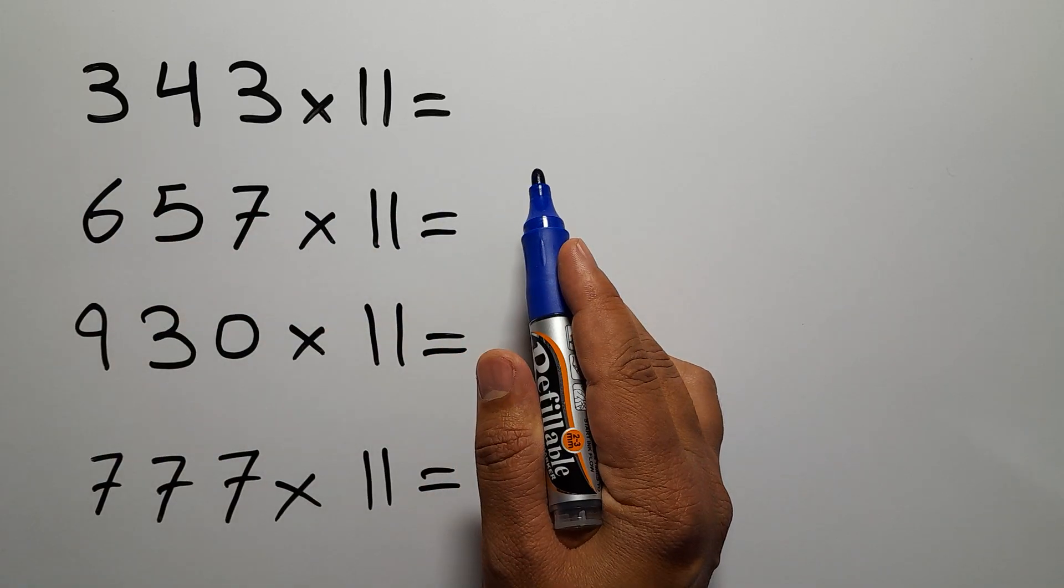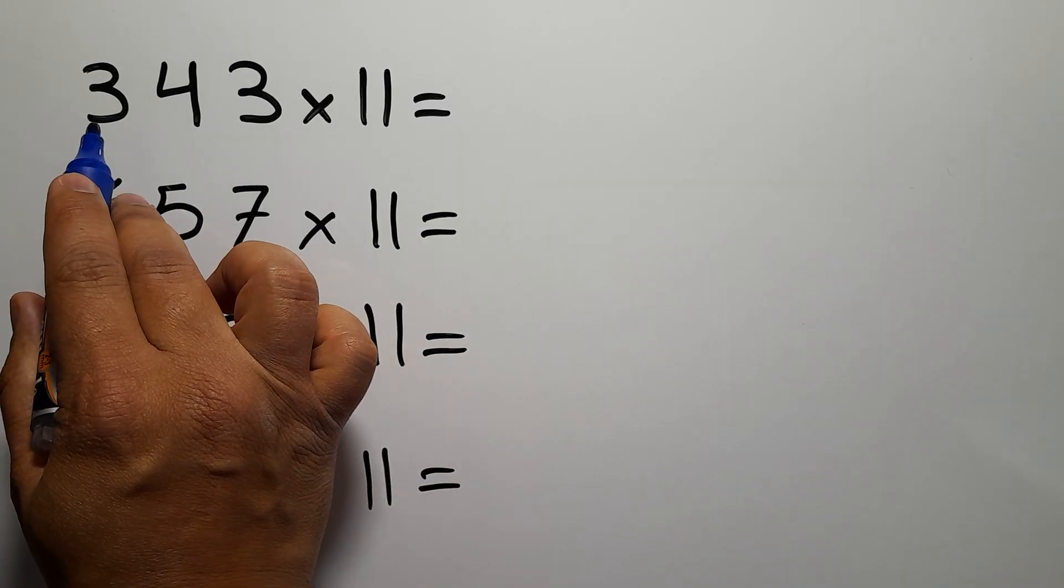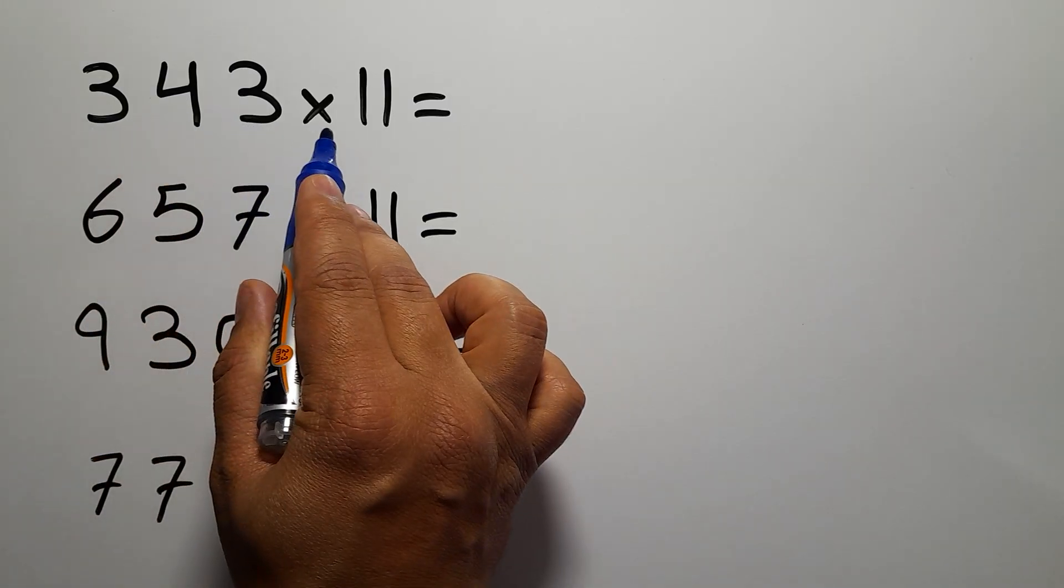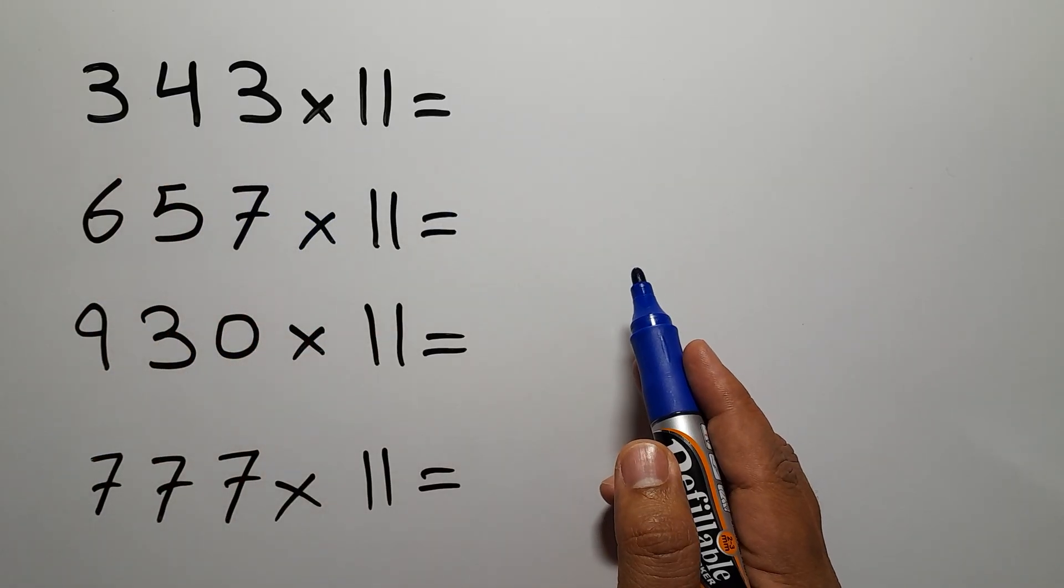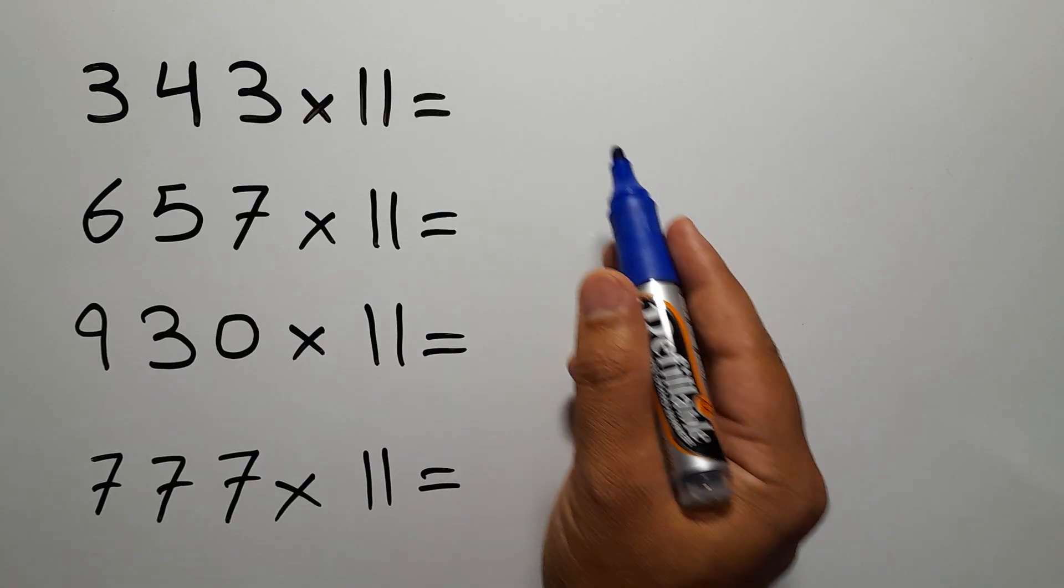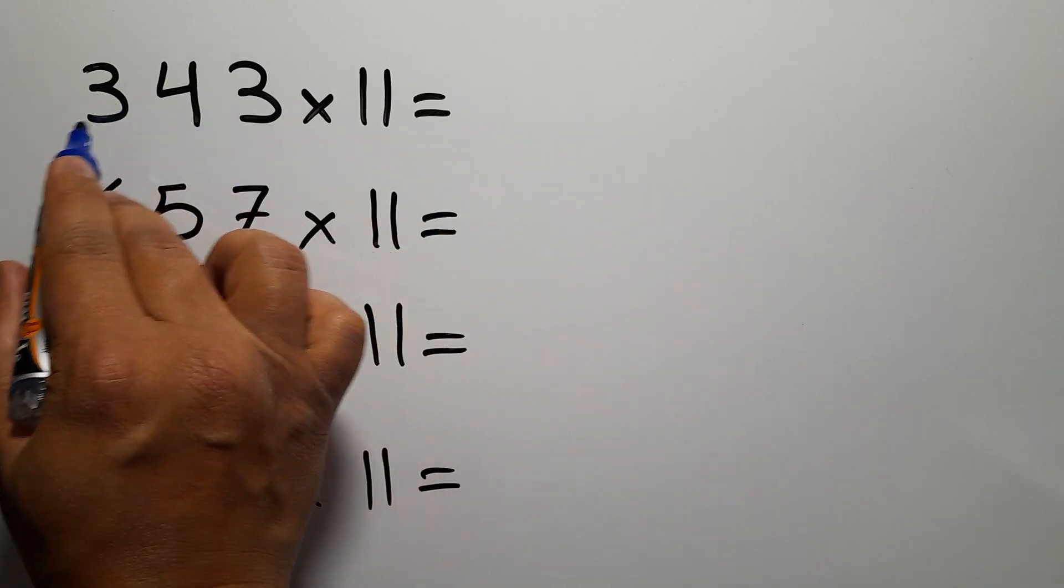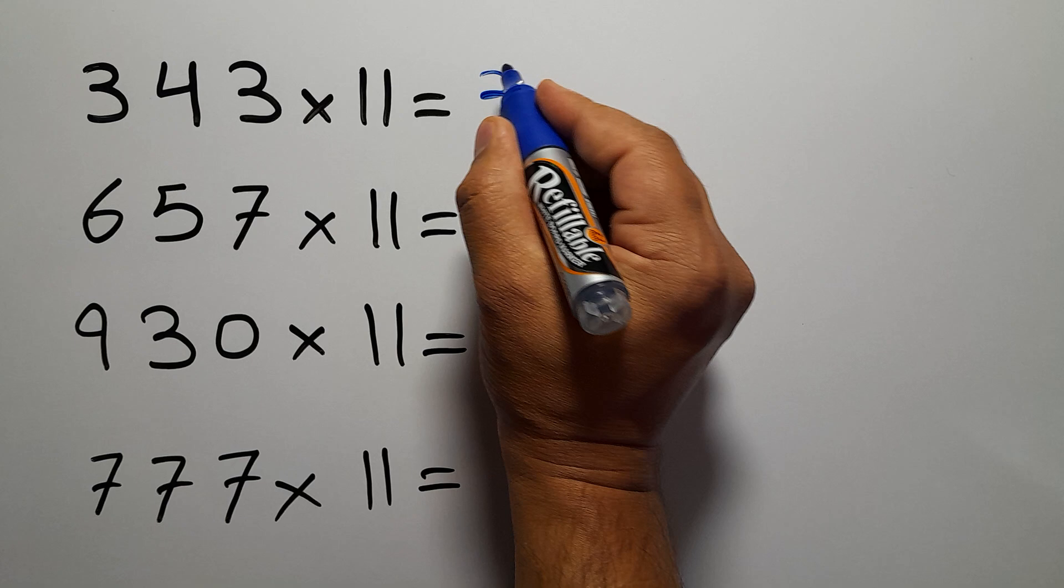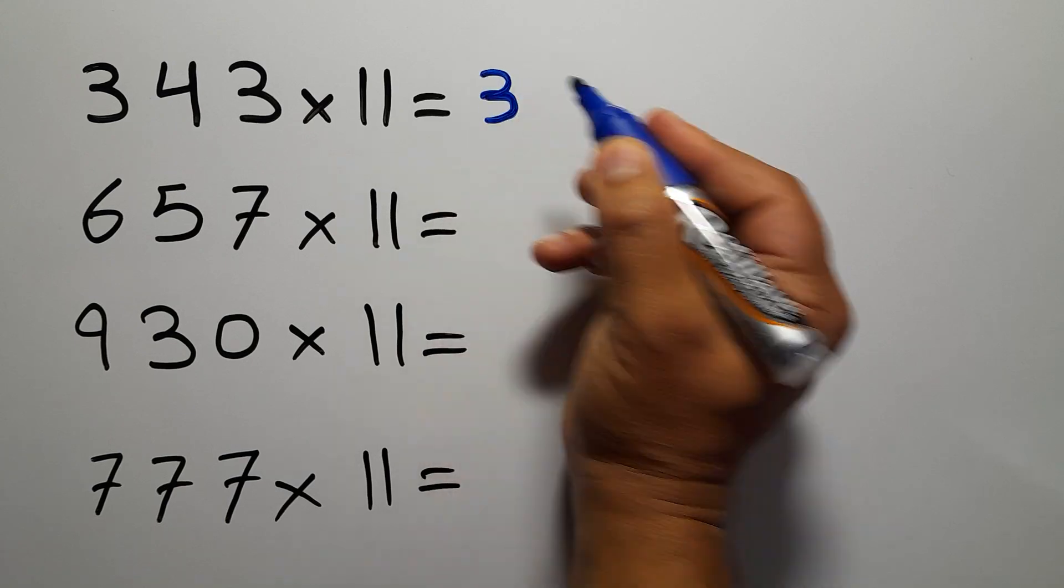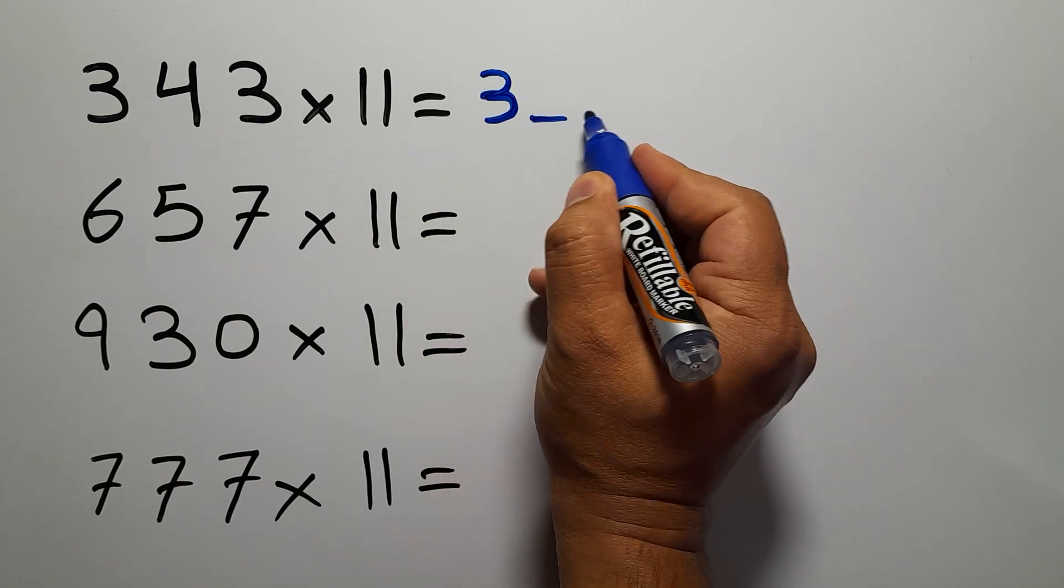Our first multiplication is 343 times 11. So first we write the first digit, which is 3, and leave two blank spaces.